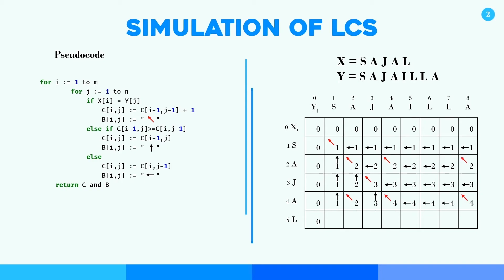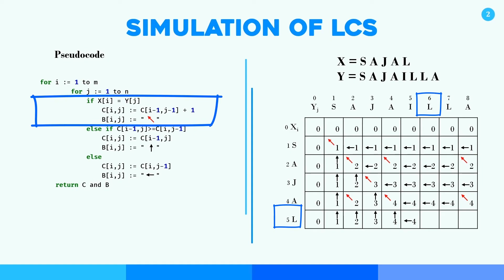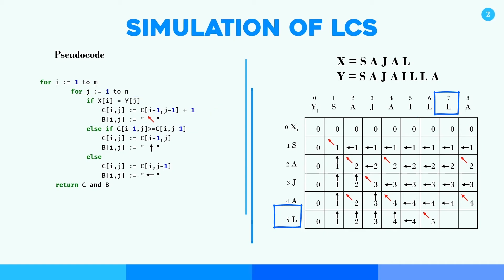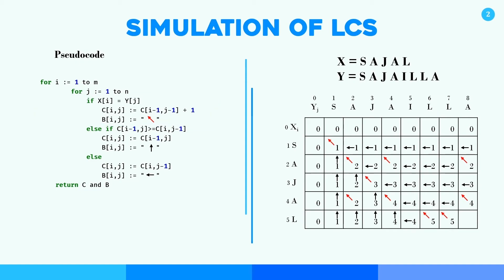At the last row, L and S is not matching — upper value is greater, so we put the upper value and upper arrow. Then L and A is not matching — upper value is greater, so 2 and upper arrow. L and J is not matching — same goes for this cell. Now L and L is matching — we put the diagonal value plus 1, so 4 plus 1 will be 5, and a diagonal arrow. Again, L and L is matching — 4 plus 1 will be 5 and diagonal arrow. And lastly L and A is not matching — upper value is not greater or equal, so we put the left value 5 and left arrow. We have now filled all the values in the array.